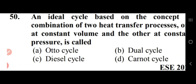An ideal cycle based on the combination of two heat transfer processes — one at constant volume and the other at constant pressure — is called a dual cycle. In a dual cycle, part of heat is first supplied at constant volume and then remaining part at constant pressure. Option B — dual cycle — is right.